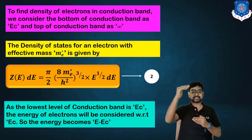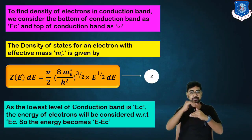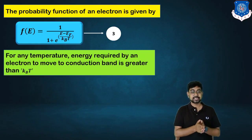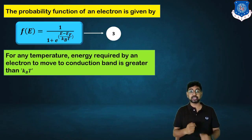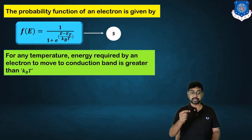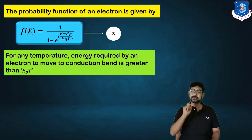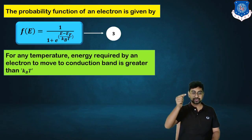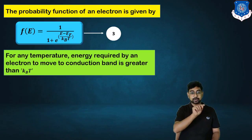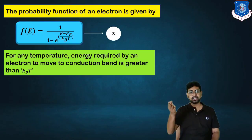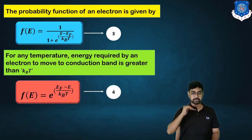The probability function for electrons is F(E) = 1 / (1 + e^((E−E_F)/k_BT)). The thermal energy required by an electron to move to the conduction band is much greater than k_BT, so in the term (E−E_F)/k_BT the exponent is very large, meaning the 1 in the denominator can be neglected. By omitting the 1 and inverting, we get the Boltzmann approximation: F(E) ≈ e^((E_F−E)/k_BT).